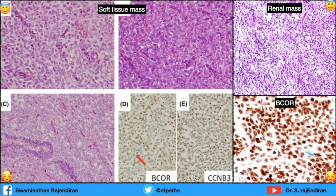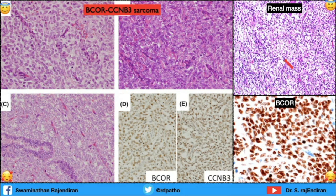This soft tissue mass is positive for BCOR and CCNB3, so the diagnosis is BCOR-CCNB3 sarcoma. This renal mass has some clear cells as well as small blue cells and is positive for BCOR — that's clear cell sarcoma of the kidney. Again, remember: no pleomorphism, no mitosis, uniformly cellular tumors.